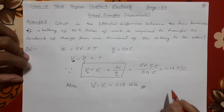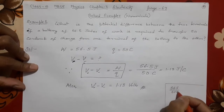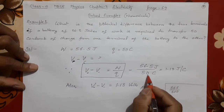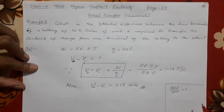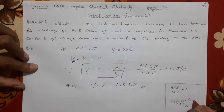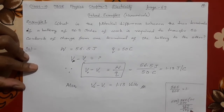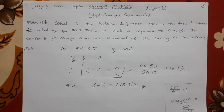Let me show how 1.13 is obtained. 56.5 divided by 50: shift one digit to get 565 divided by 500. 500 ones are 500, remainder 65; keep a decimal point, bring down a zero — 650; 500 ones are 500, remainder 150; 500 threes are 1500. So the answer is 1.13 volts. That is the first problem solved.